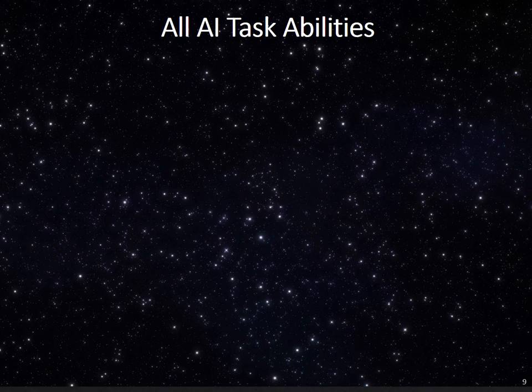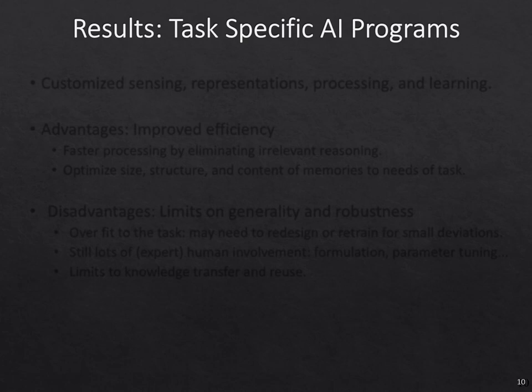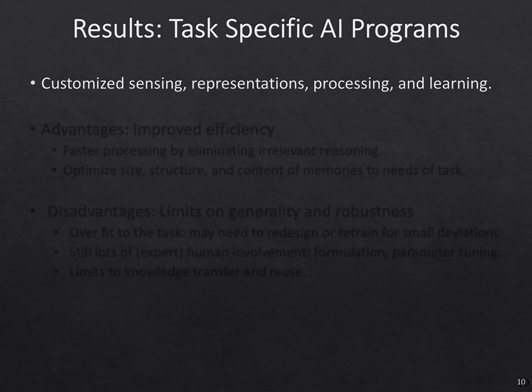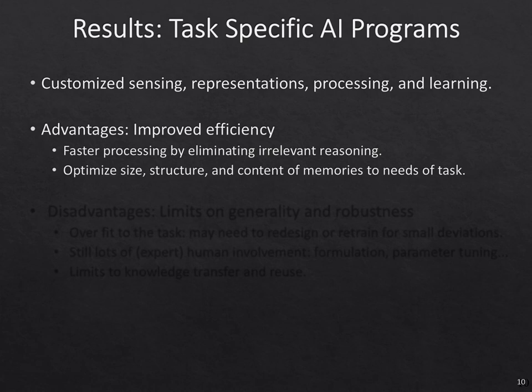One of my concerns is that if we want to build general AI systems, we need to go beyond these individual tasks. This happens because we have very task-specific AI programs — ones that are customized with their sensing, representations, processing and learning. The advantage is that we get improved efficiency and can eliminate irrelevant reasoning. For example, a chess program when it's playing chess does not get distracted by things that a human would — it is only doing chess.